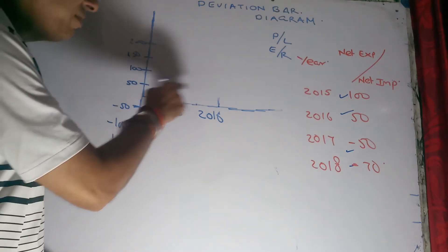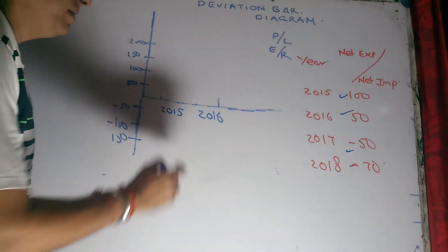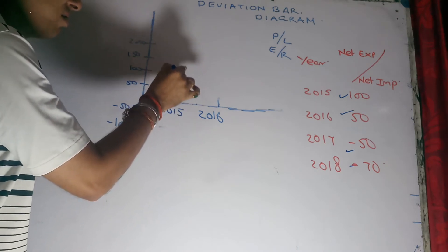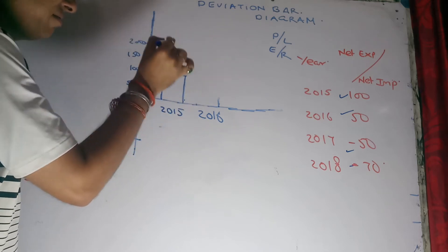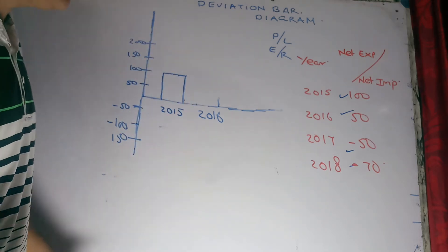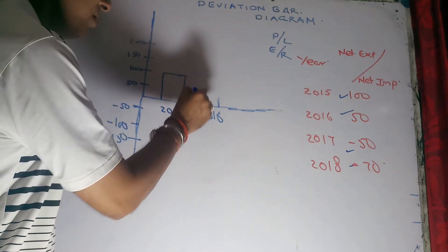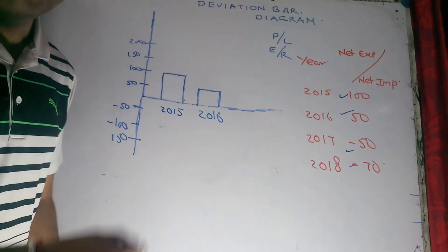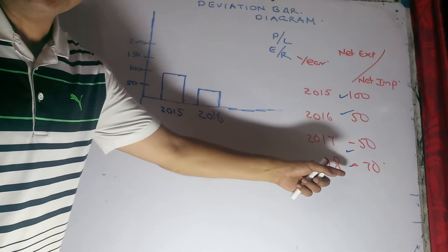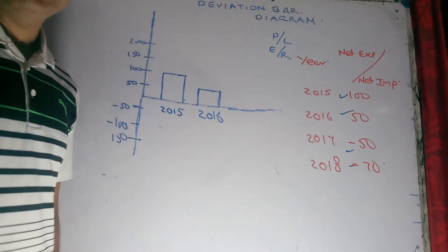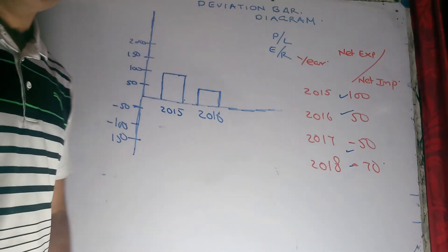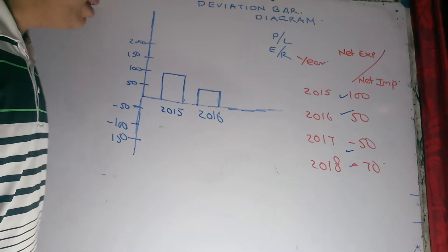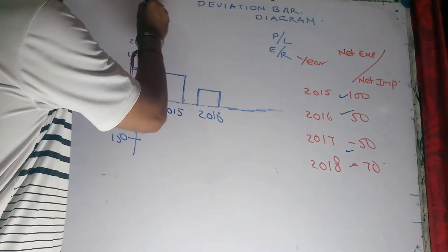Let's present it. In 2015, our net exports are 100, so I am going to take a scale on the positive quadrant with 100. In the second year, 2016, exports slip to 50, so I will represent it as 50 on the positive side. But as you move ahead to 2017 and 2018, as you can see in the table, the values are negative — meaning imports are greater than exports by that amount. So I am going to move into the negative quadrant on the axis to present those figures.